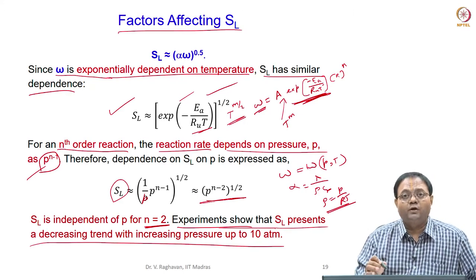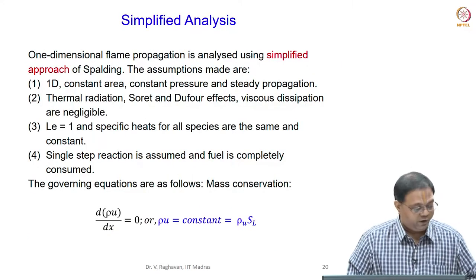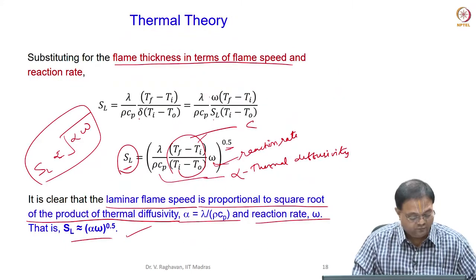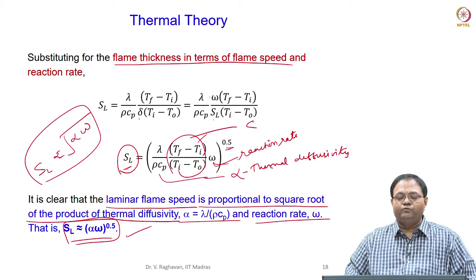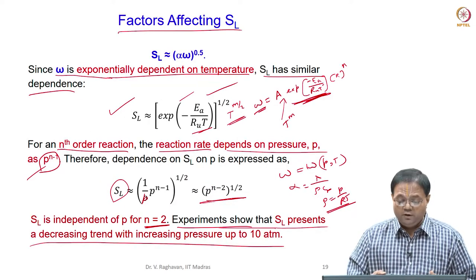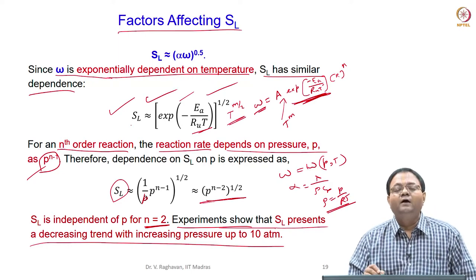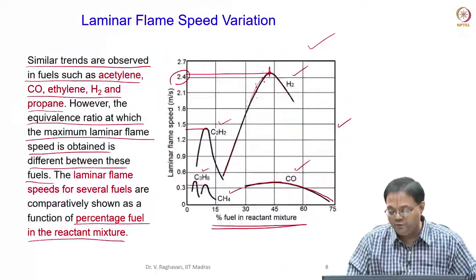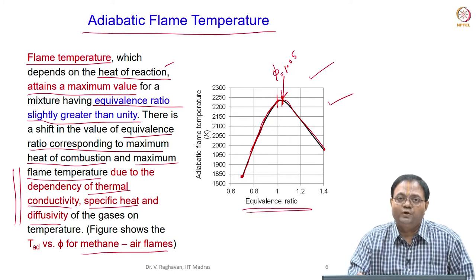This you have to remember: temperature is the one which is going to mostly affect the SL value and pressure slightly affects it. The thermal theory gave us the conclusion that SL is proportional to the square root of the product of alpha, which is thermal diffusivity, and omega. Based upon that, the influence of temperature and pressure has been seen. The adiabatic flame temperature variation with equivalence ratio produces a maximum value at a slightly richer condition for methane-air flames.